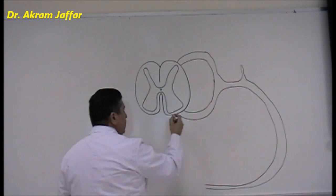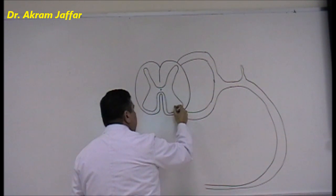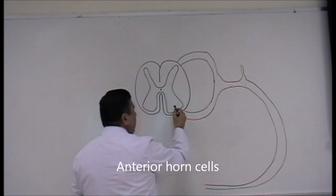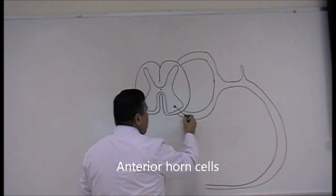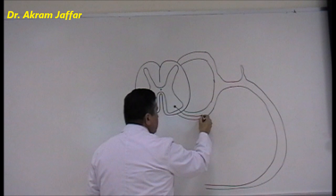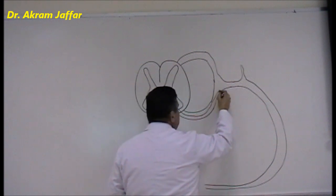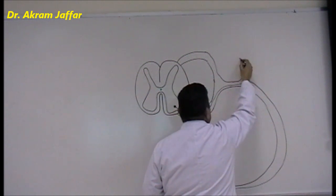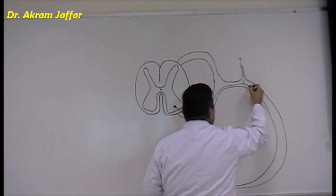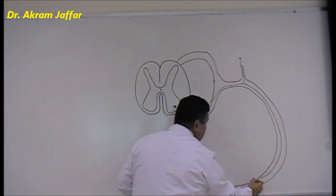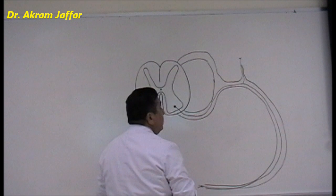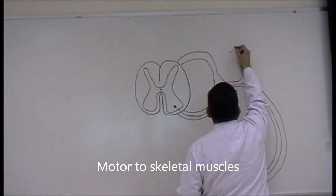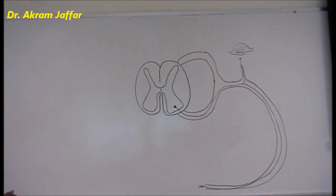The anterior root of the spinal nerve contains nerve fibers whose cell bodies are located in the anterior horn of the spinal cord — these are called anterior horn cells. These are motor efferent fibers. Their fibers pass through the anterior root of the spinal nerve, then through the spinal nerve, and are distributed through the posterior ramus and the anterior ramus.